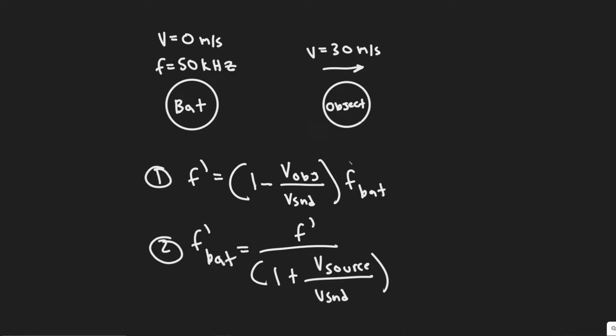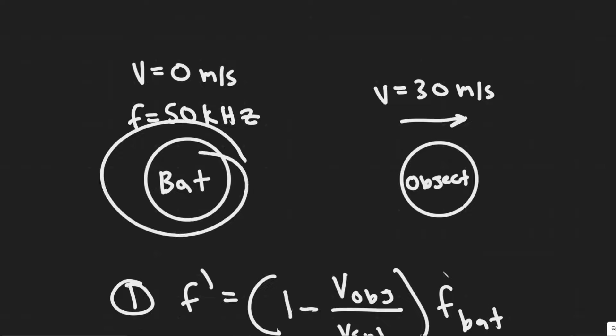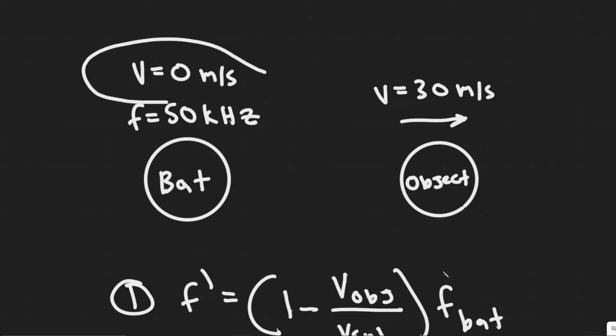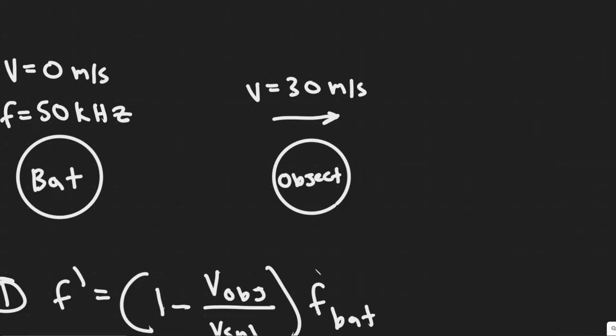In this problem, we are told a bat at rest sends out ultrasonic sound waves at 50 kilohertz and receives them returned from an object moving directly away from it at 30 meters per second. What is the received sound frequency? The first thing you always want to do is draw what's going on. We have this bat here, and we are told it's at rest, so its velocity is zero meters per second. It's sending out waves with a frequency of 50 kilohertz, and we have this object moving at a velocity of 30 meters per second away.